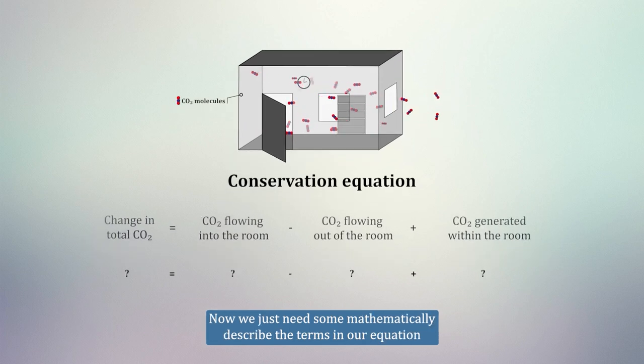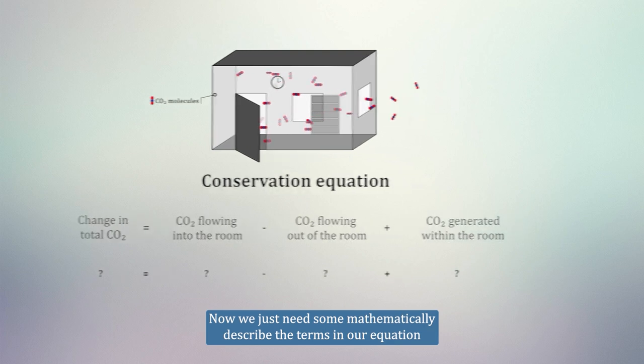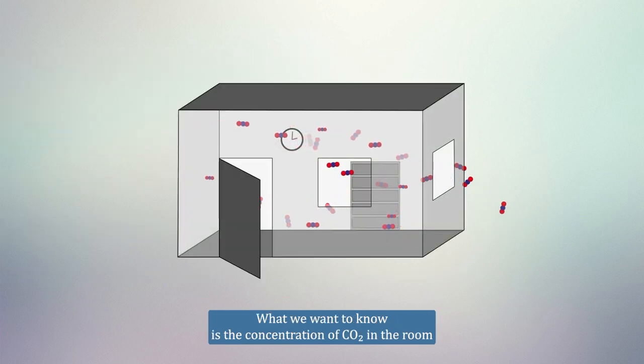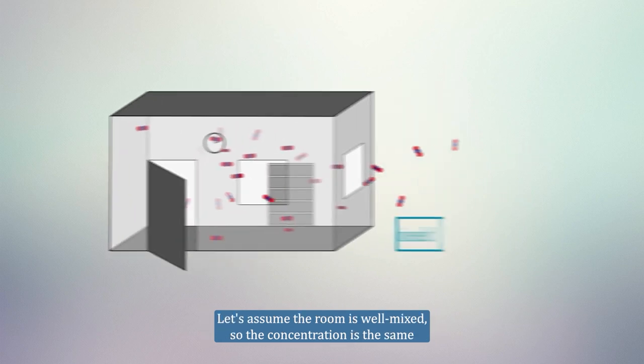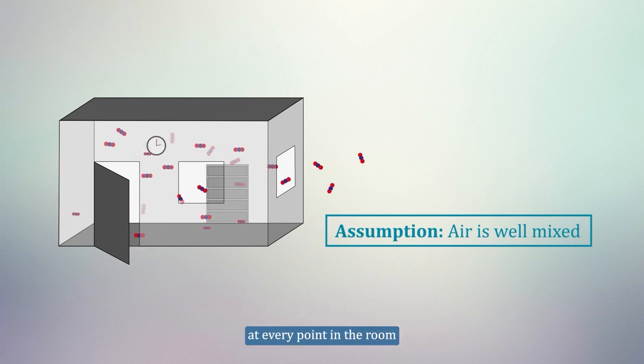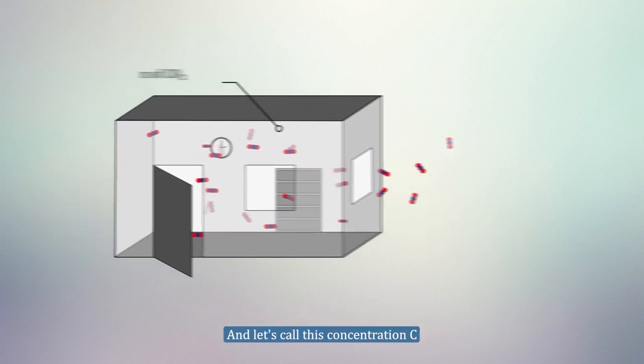What we want to know is the concentration of CO2 in the room. Let's assume the room is well mixed, so the concentration is the same at every point in the room, and let's call this concentration C.